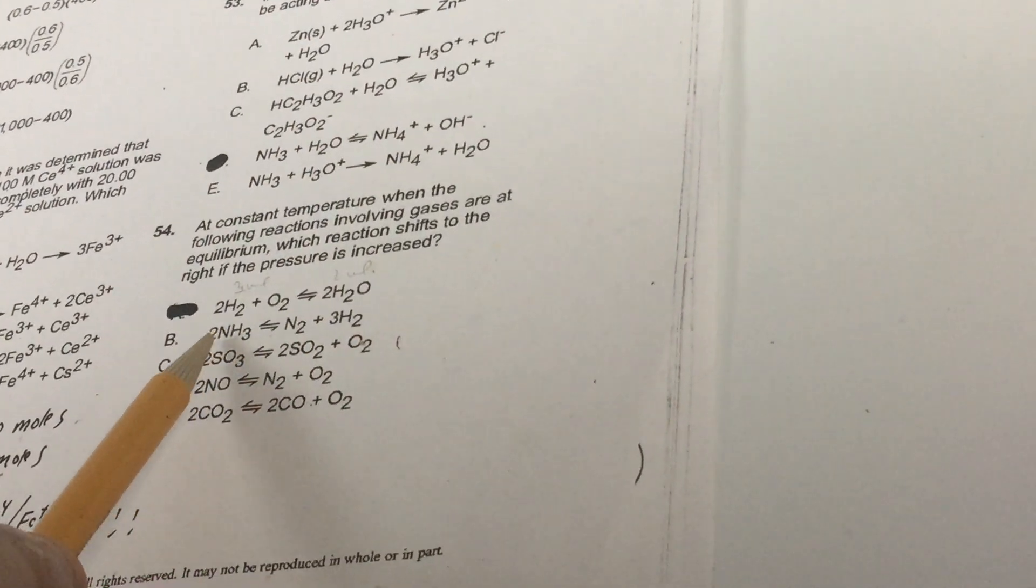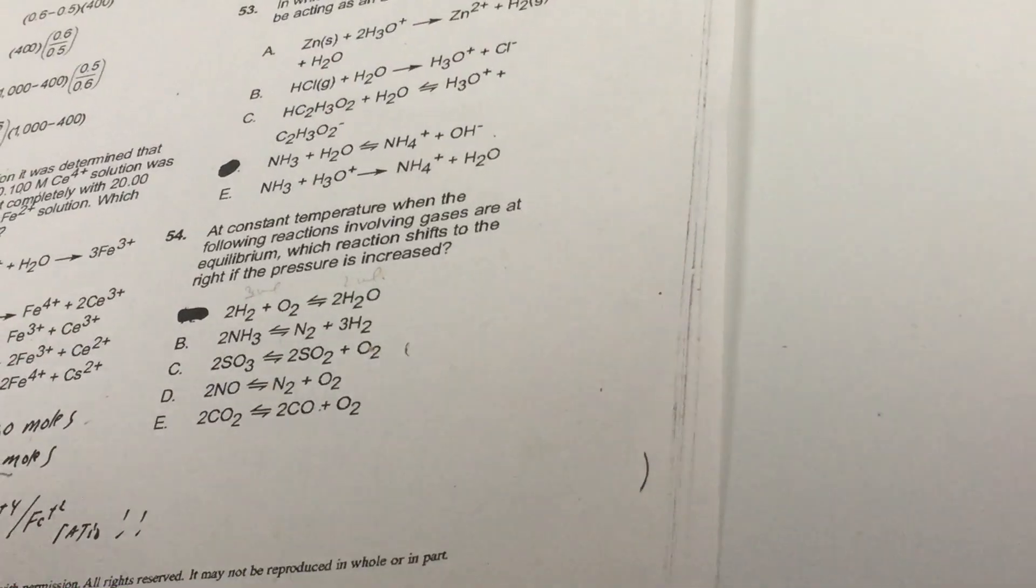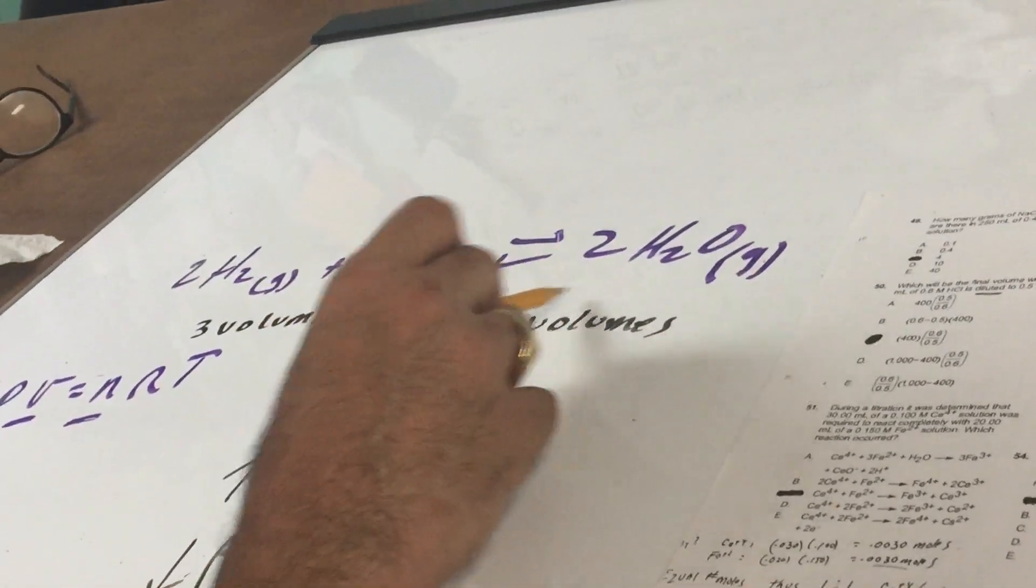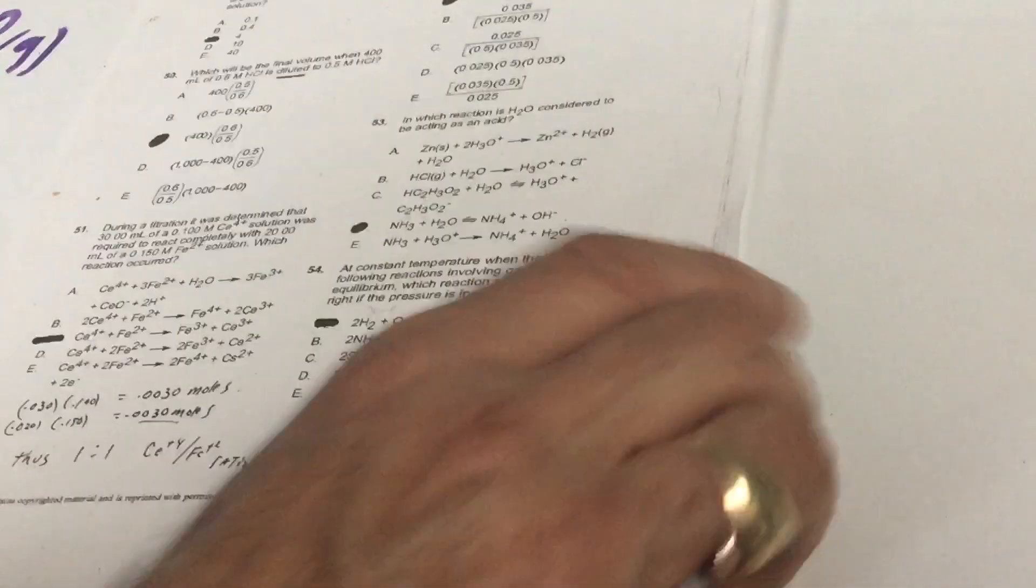If you go to choice B, there's 2 volumes of gas on the left and 4 volumes of gas on the right. So that means if pressure goes up, the volume would go down, and it would shift to the left. So that's why those choices would be wrong. Only in choice A, the smaller volume is on the right side. So as the pressure went up, you would bring it into a smaller volume container. There's a lot of questions like that that I want you to look at in the destroyer.